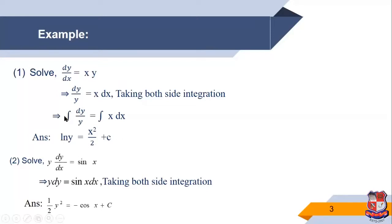Another example: solve y(dy/dx) = sin x. On the right-hand side is sin x, so we move dx to the right and get y dy = sin x dx. The left side depends only on y and the right side depends only on x. Taking integration on both sides, we get y²/2 = −cos x + c. This is the required solution.